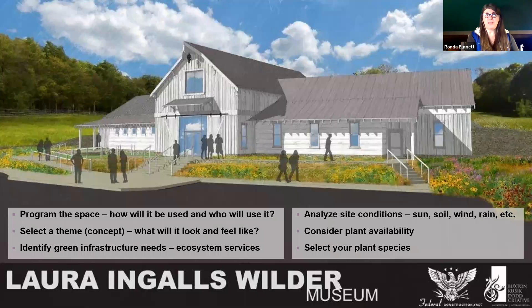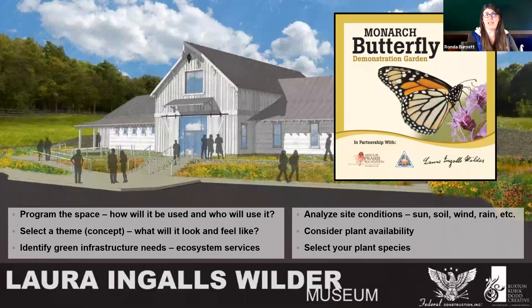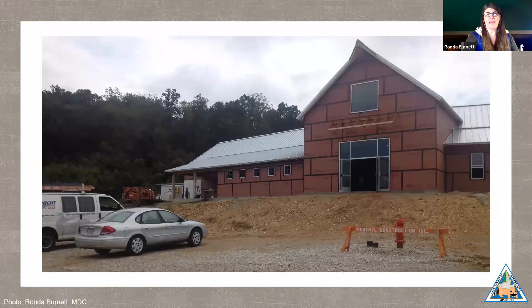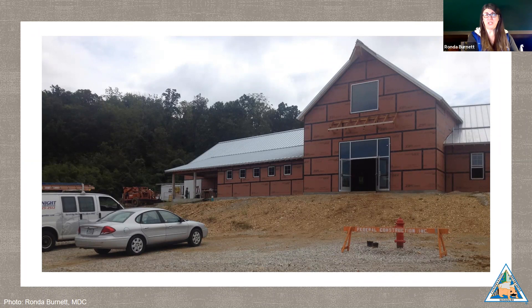Knowing the programming and the theme, the next step was to identify any green infrastructure needs. At the time I was approached, there was a lot of interest in providing habitat for declining monarch butterfly populations. When I conducted a site visit, I found that the front landscaping bed was much steeper than it appeared on the rendering. Another ecosystem service was identified — soil erosion control — though I wasn't worried because prairie species with their extensive root systems would handle that. My only concern was keeping that soil in place until the plants became established.